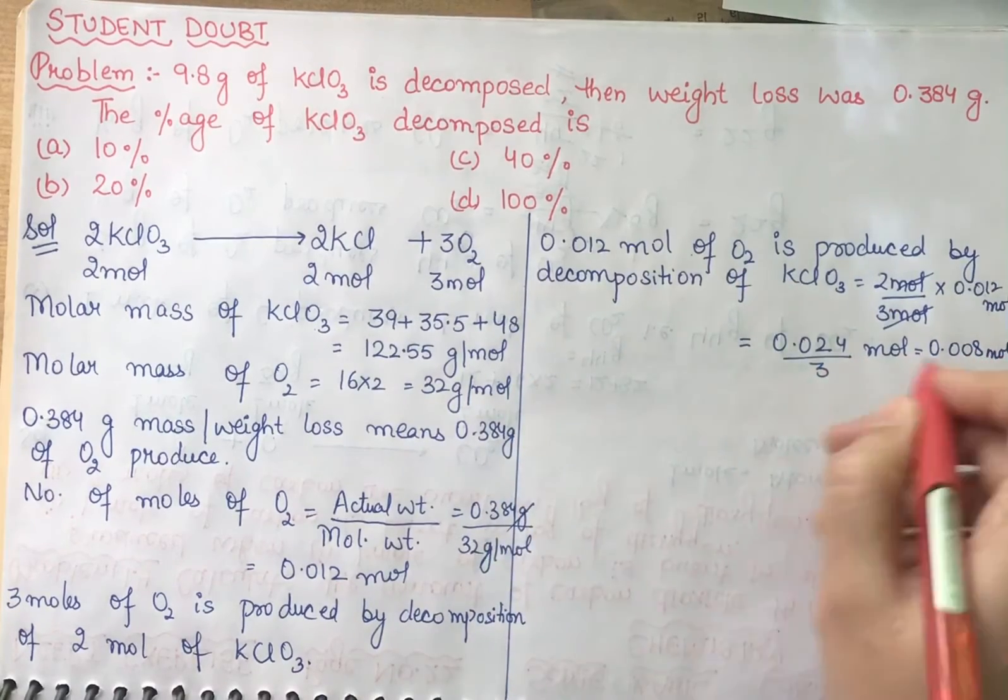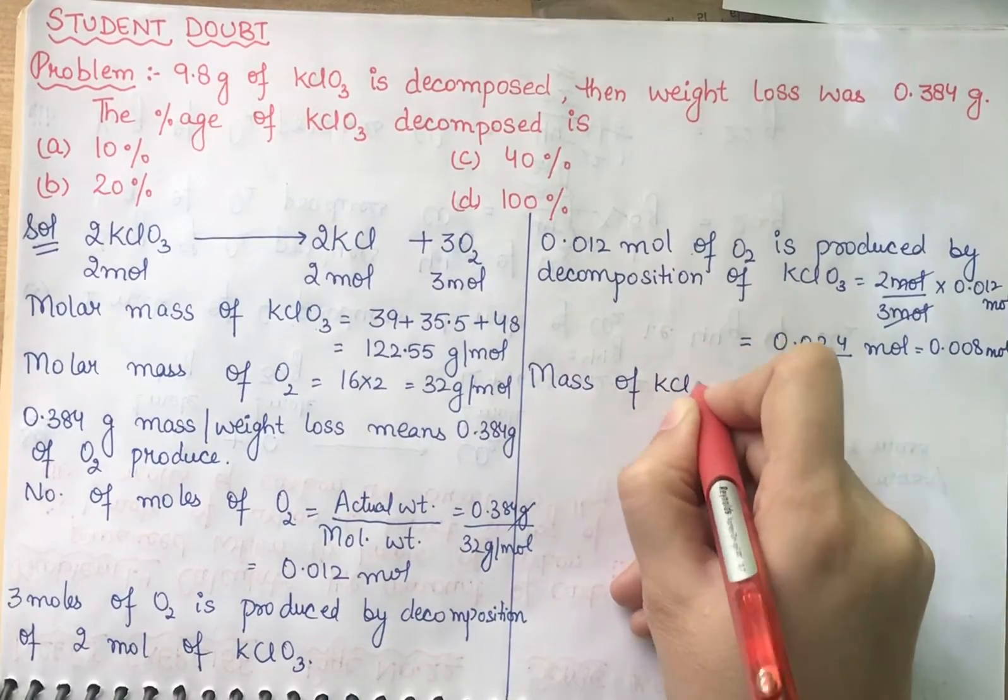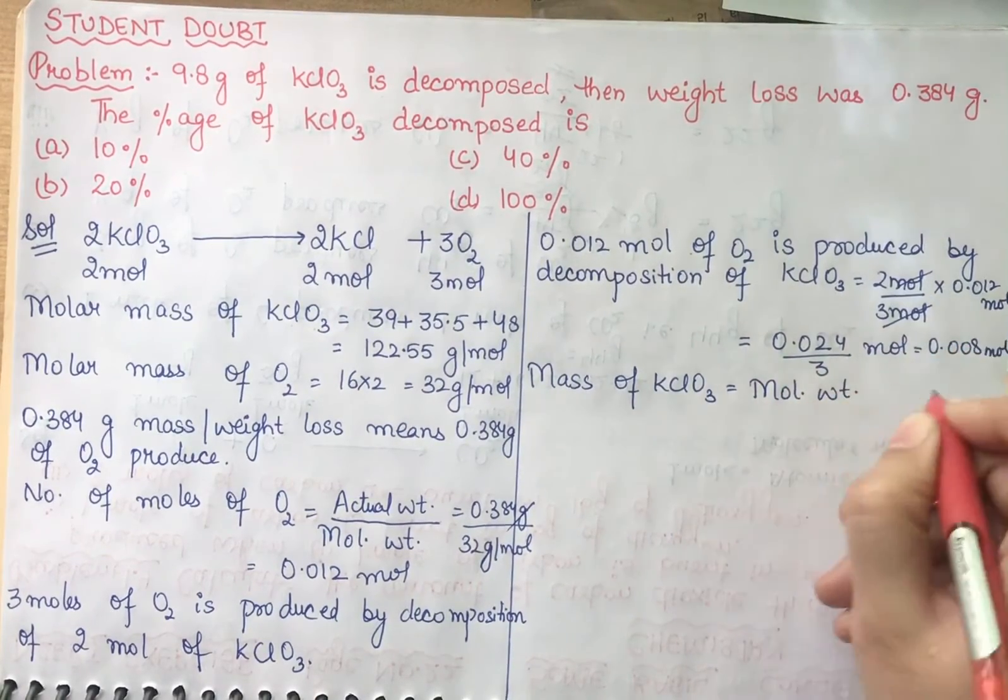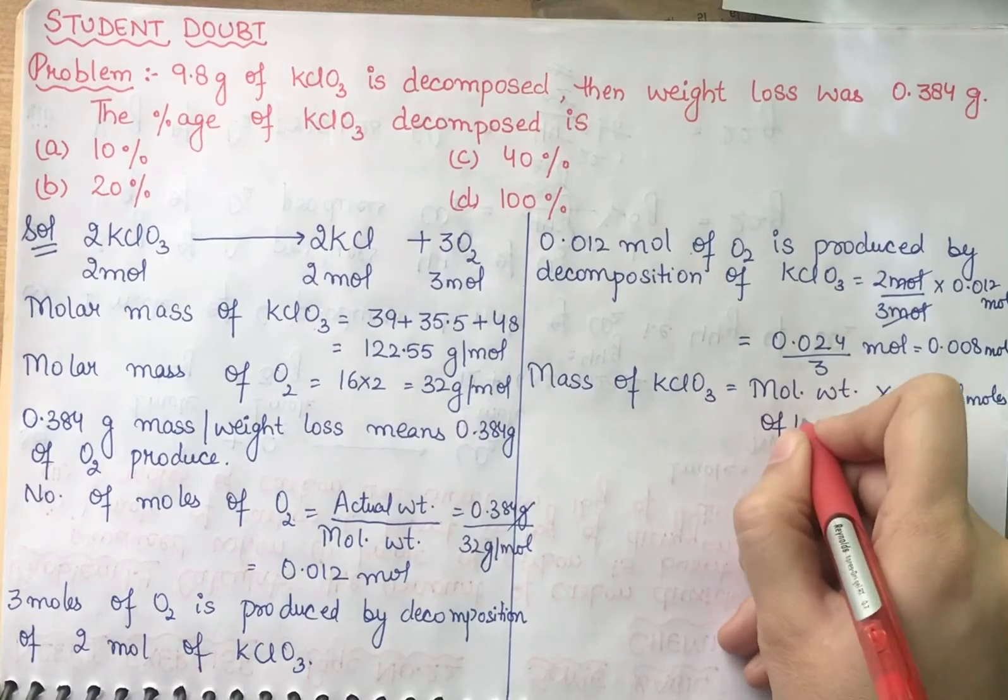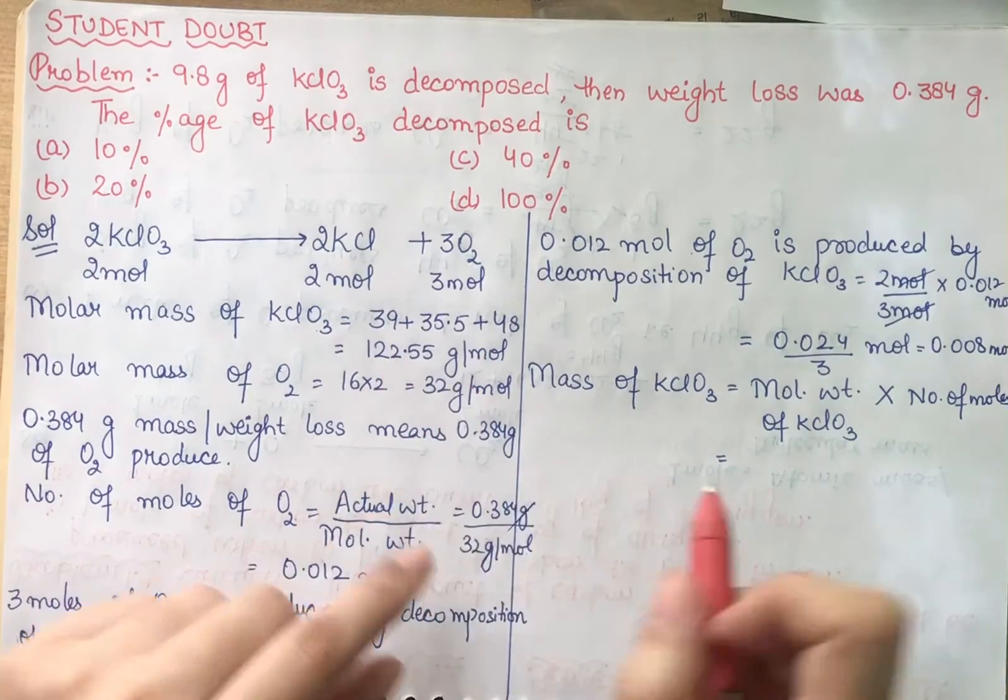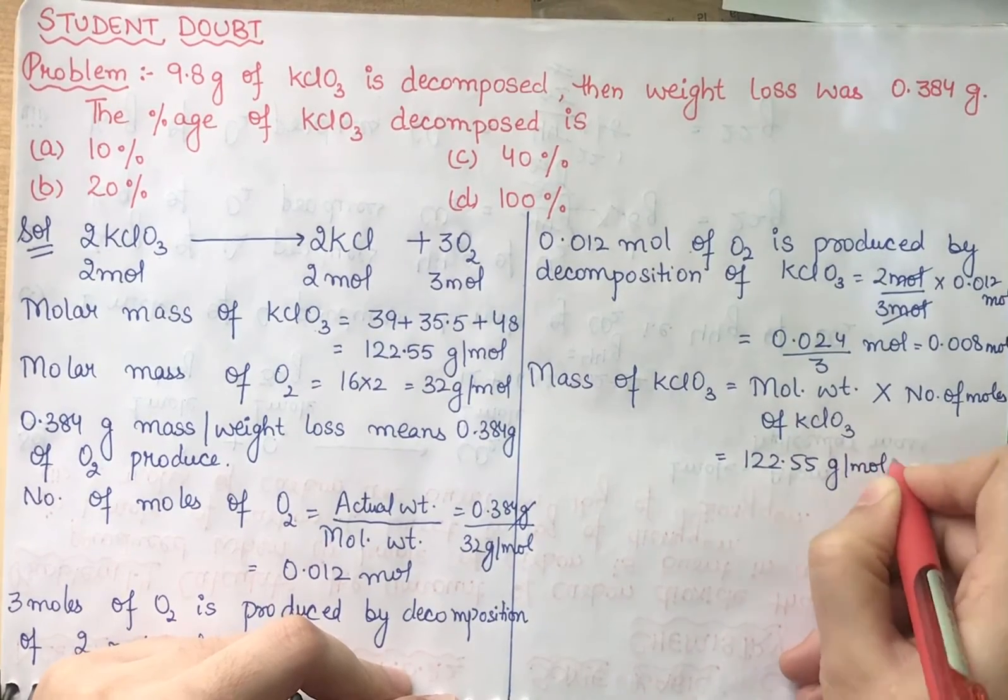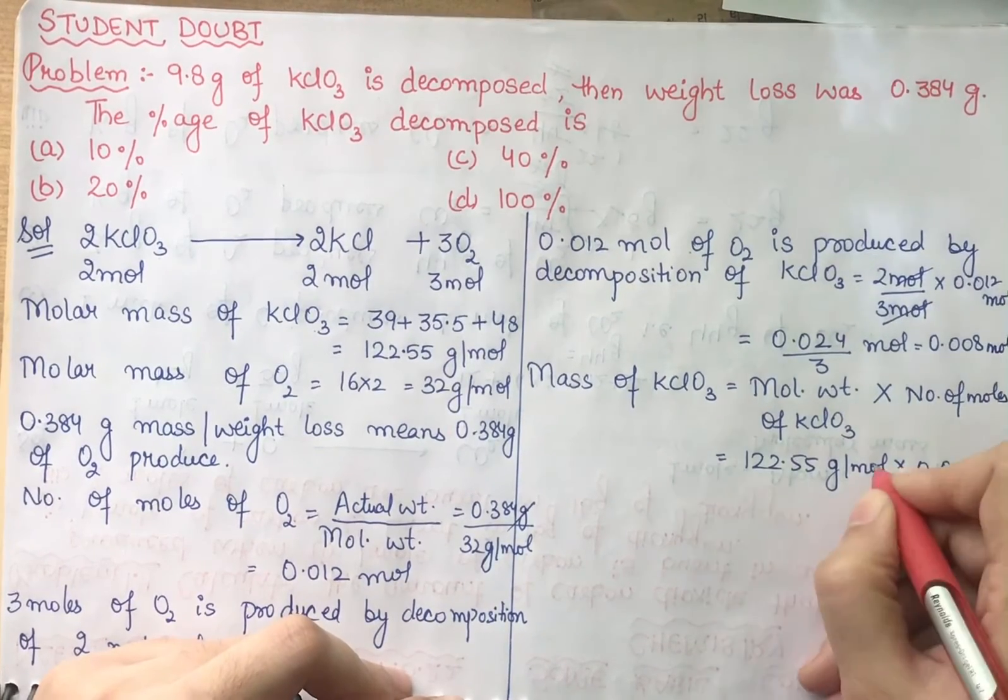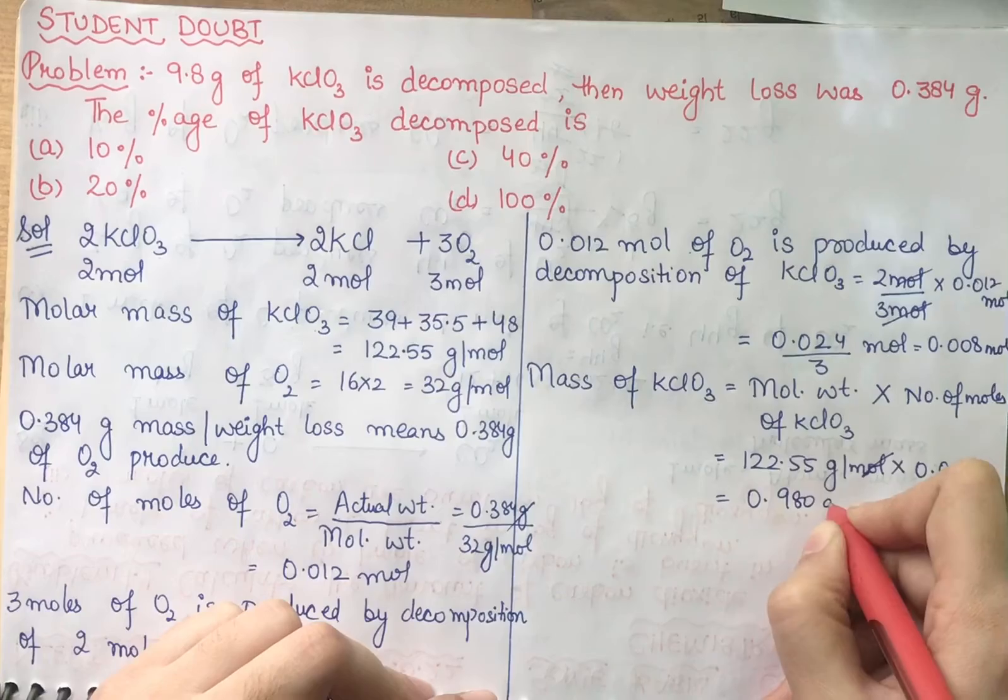Now we have cancelled our mole with mole. So if we have divided, your answer is 0.008 mole. That's the amount of KClO3 decomposed, and with respect to that, the amount of mole of oxygen is produced. So now you can find this mass in moles. Mass of KClO3 equals molecular weight times number of moles of KClO3. Molecular weight is 122.55 grams per mole times 0.008 mole. When you multiply these two values, your answer is 0.980 gram.